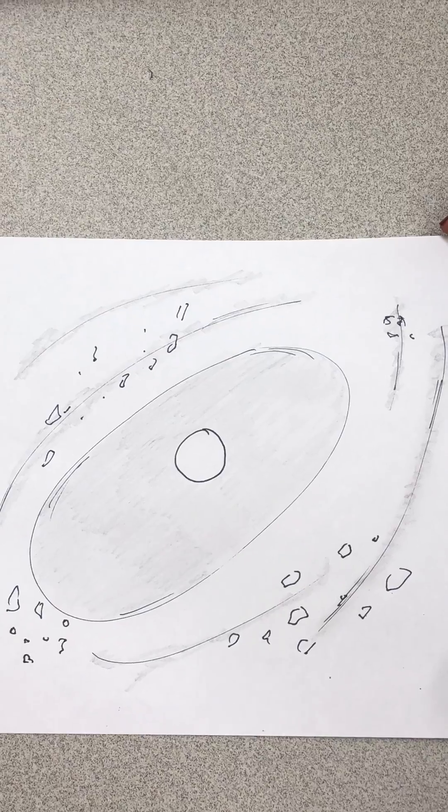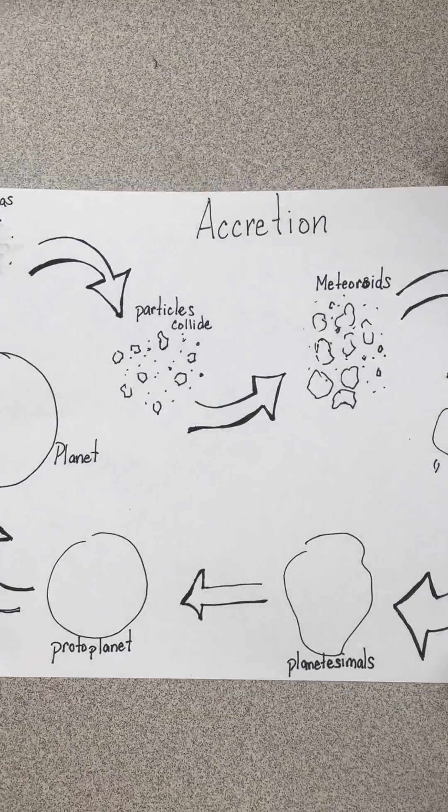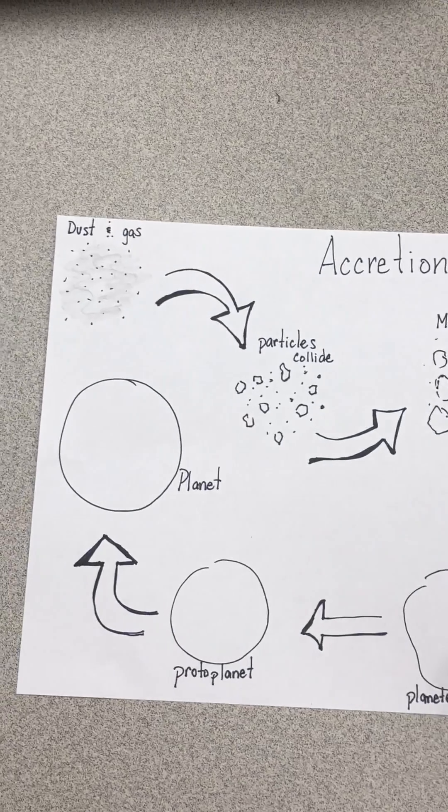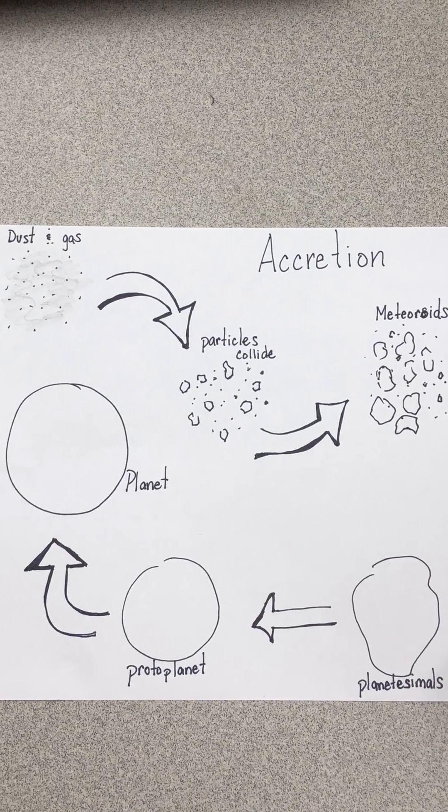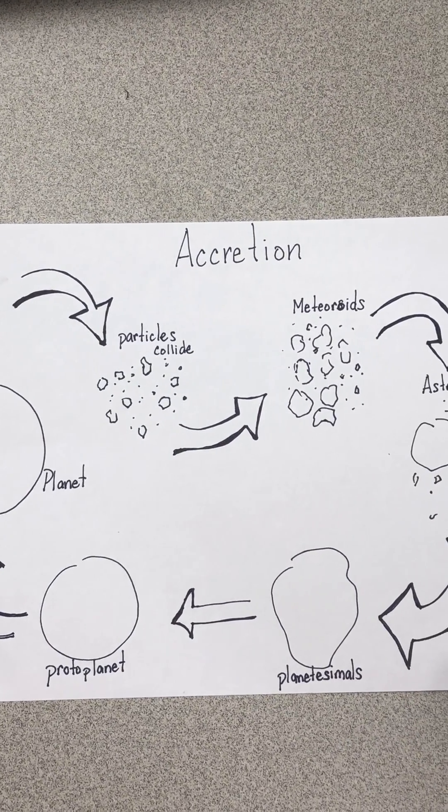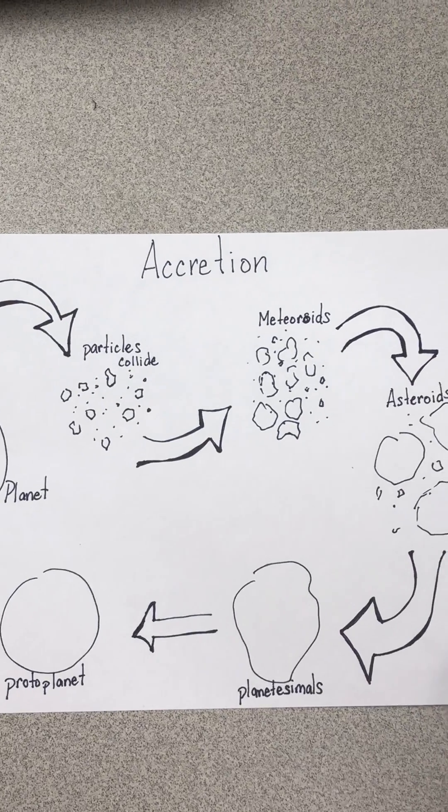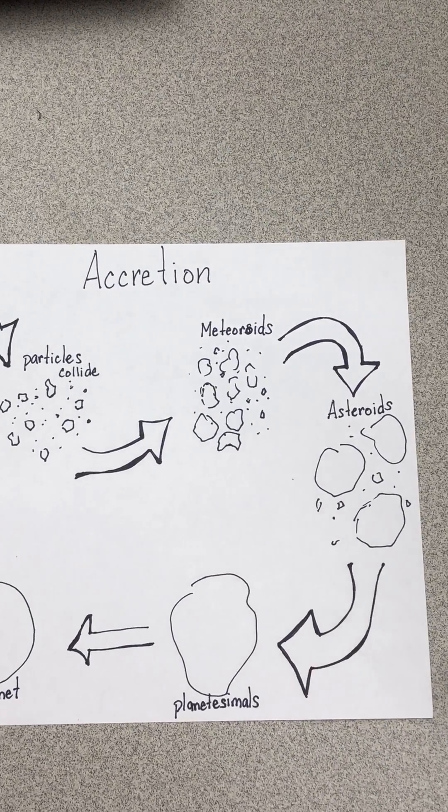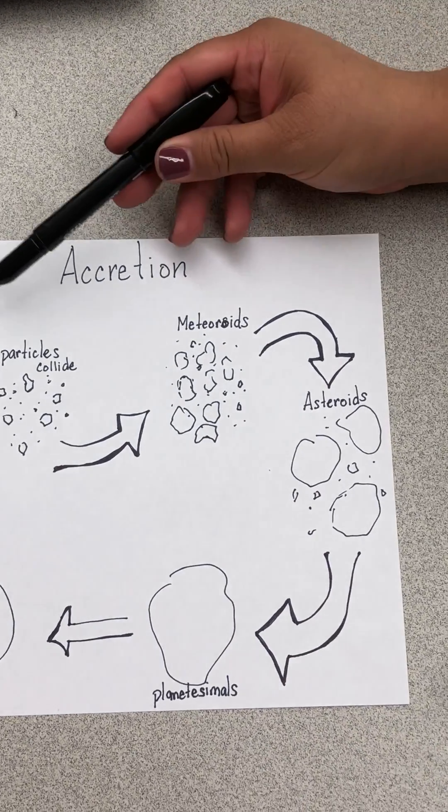That material started to accrete. The materials such as iron, having higher melting points, started to gather closest to the sun. These materials started to stick together, making even larger pieces.